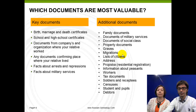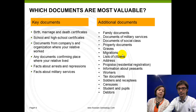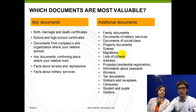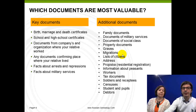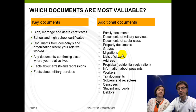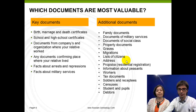Additional documents can help you understand details about the life of your relatives in Russia. These could include addresses where they lived in Russia, in towns, cities, or villages, and registrations of citizens, etc. You might need to spend more time finding additional documents, and they can be stored not only in state archives but in many other establishments. Start with key documents first, and then move on to additional documents.